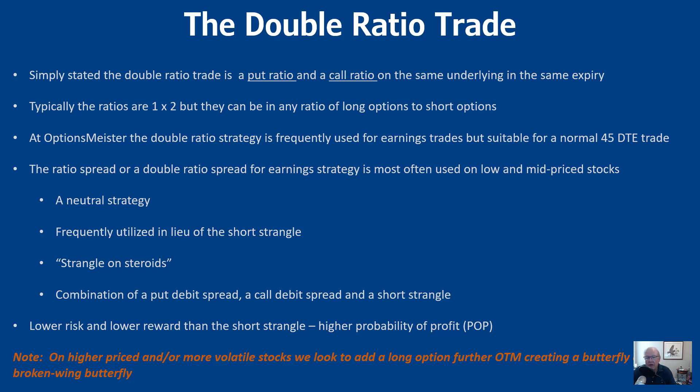The ratios are typically one-by-two, but they can be any ratio of long options to short options. I'm typically short two and long one. At OptionsMeister, the double ratio strategy is frequently used for earnings trades but is also suitable for normal 45-days-to-expiration trades. The strategy is most often used on low and mid-price stocks.